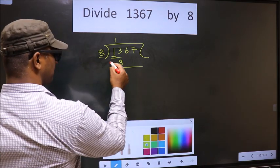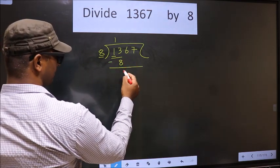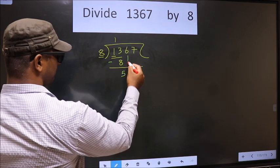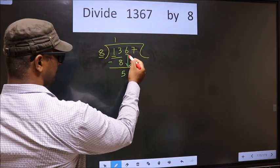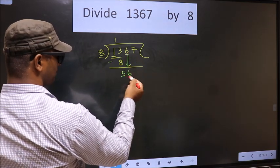Now you subtract. 13 minus 8, 5. Now you will bring down the beside number, that is 6 down.